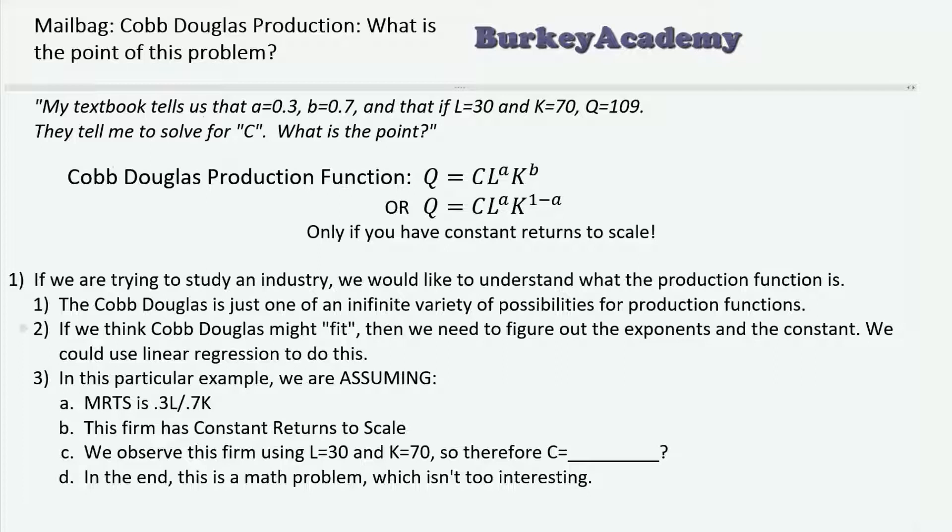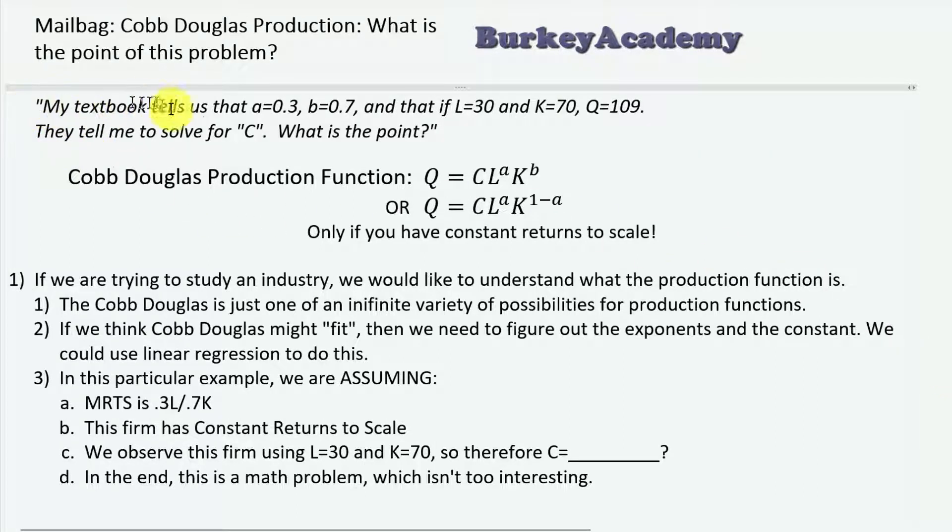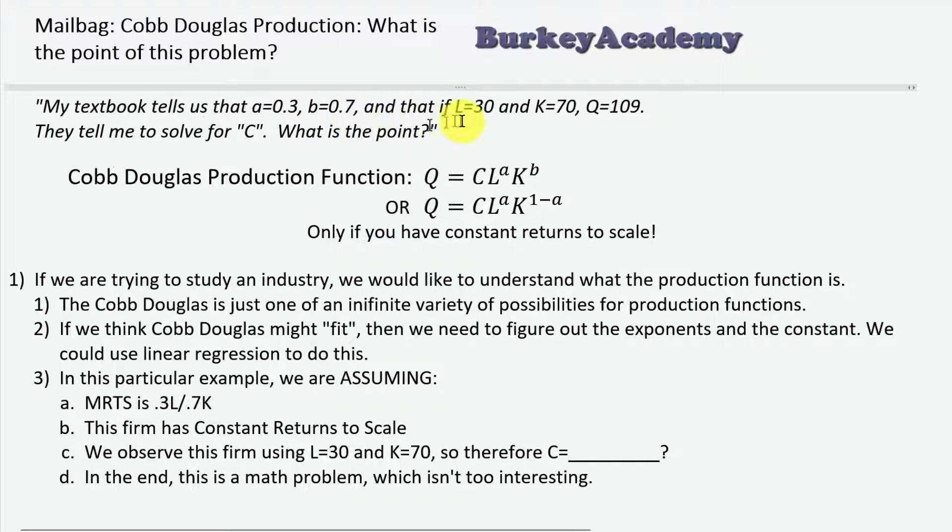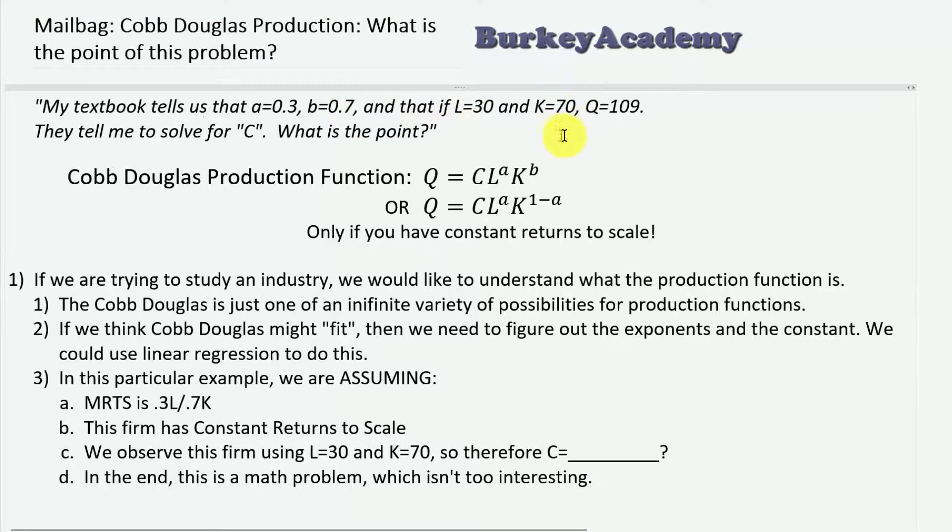In the mailbag today, we have a question about Cobb-Douglas production function. My textbook is telling me that a equals 0.3 and b equals 0.7, so this is the exponent on labor and the exponent on capital is 0.7. They use 30 laborers and 70 units of capital, and the amount of output is 109.